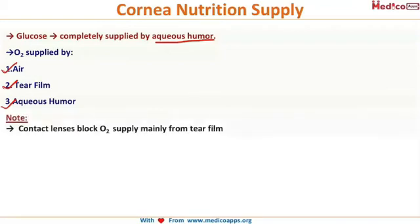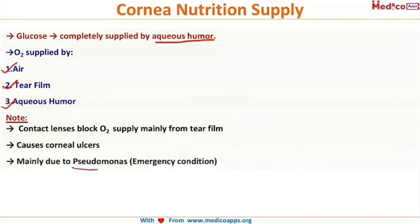When you wear a contact lens on the cornea, the oxygen supply is cut off from both the atmospheric air and the tear film, because the cornea is no longer in contact with the tear film. This leads to corneal ulcers. Most commonly, contact lens-associated corneal ulcers are caused by pseudomonas.